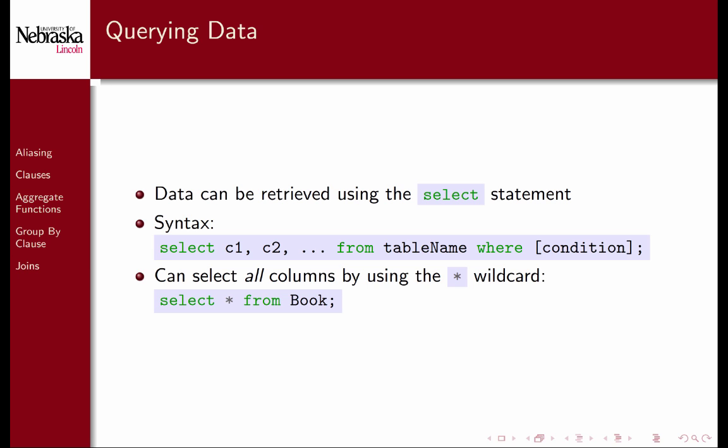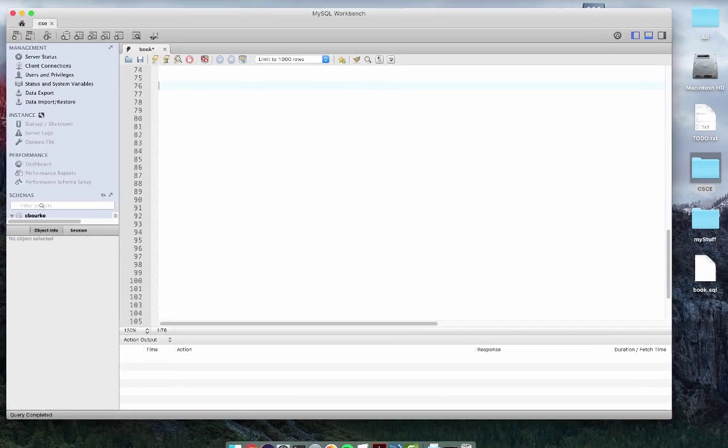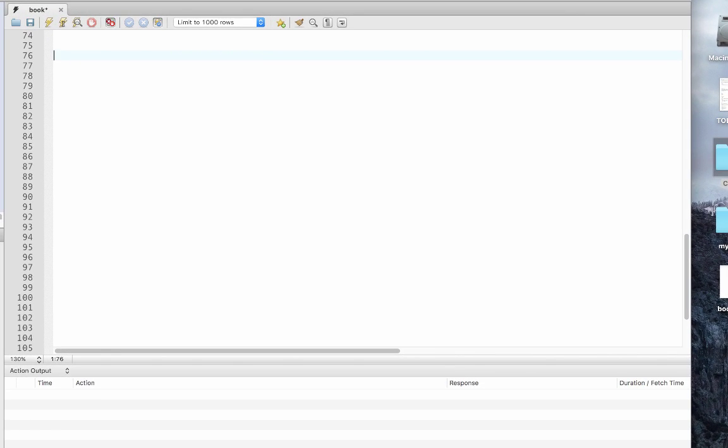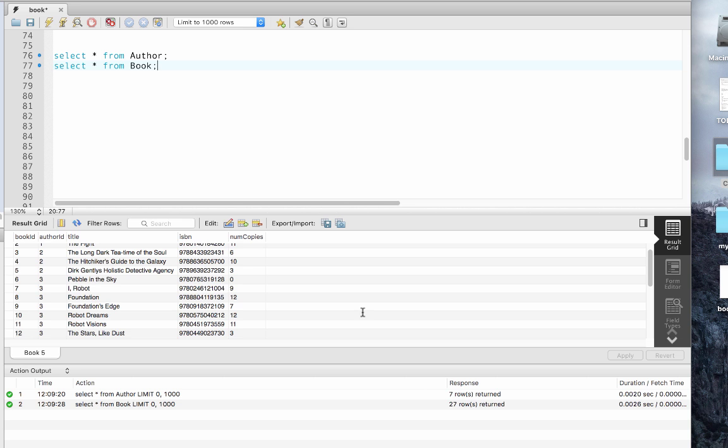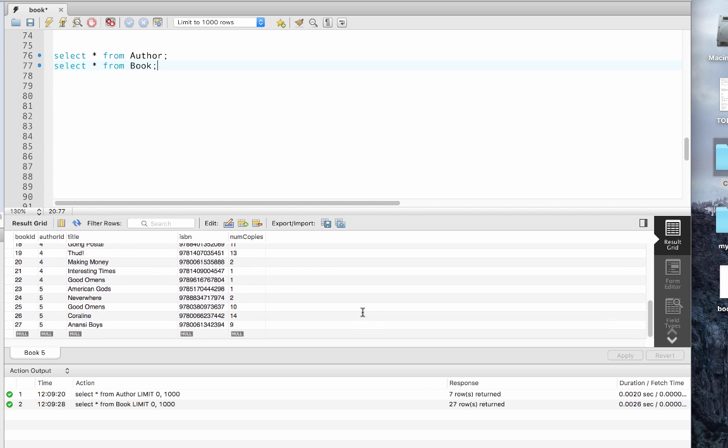Let's take a look at some examples from our author book database. I've already loaded the database with a collection of records. First let's select out all the authors. Now let's select out all the books.